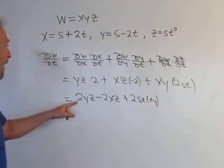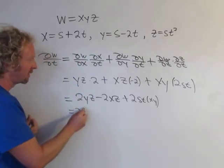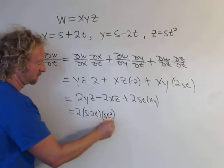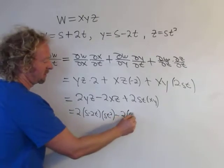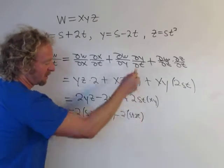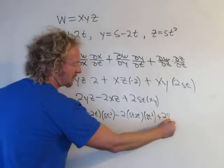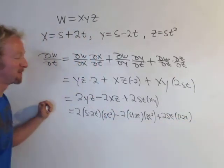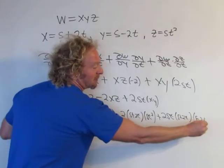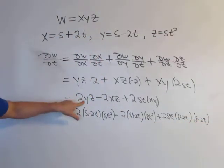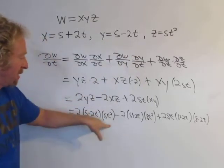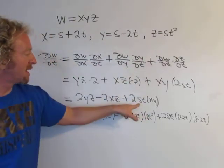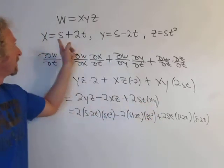Now we plug x, y, and z back in. We get: 2·(s − 2t)·(st²) − 2·(s + 2t)·(st²) + 2st·(s + 2t)·(s − 2t). We replaced y with s − 2t, z with st², and x with s + 2t throughout.